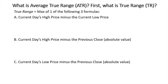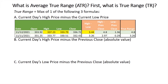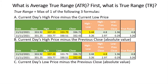So what is this average true range? First, what is true range? True range is the max of one of the following three formulas: current day's high price minus the current day's low price; second, current day's high price minus the previous close — take the absolute value of that.